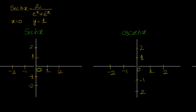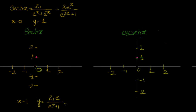So if x equals 0, y equals 1. For x equal to 1, we can rewrite as 2e^x by (e^(2x) + 1), which gives approximately 5.4 by 8.3, that is approximately 0.65. And we know this is an even function, so we will have the exact same value on the other side too.